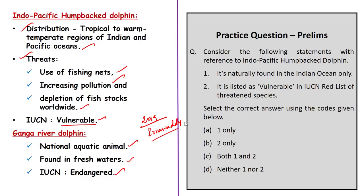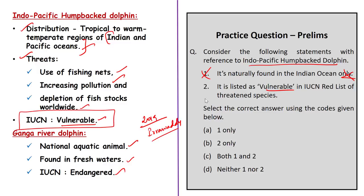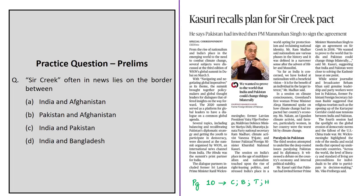Now look at this question on Indo-Pacific humpback dolphin. Two statements are given and you need to choose the correct one. The first statement says it is naturally found in the Indian Ocean only — this is incorrect, as this dolphin is found across Indian and Pacific oceans from tropical to warm temperate regions. The second statement says it is listed as vulnerable in the IUCN Red List — this is correct. The correct answer is option B: two only.